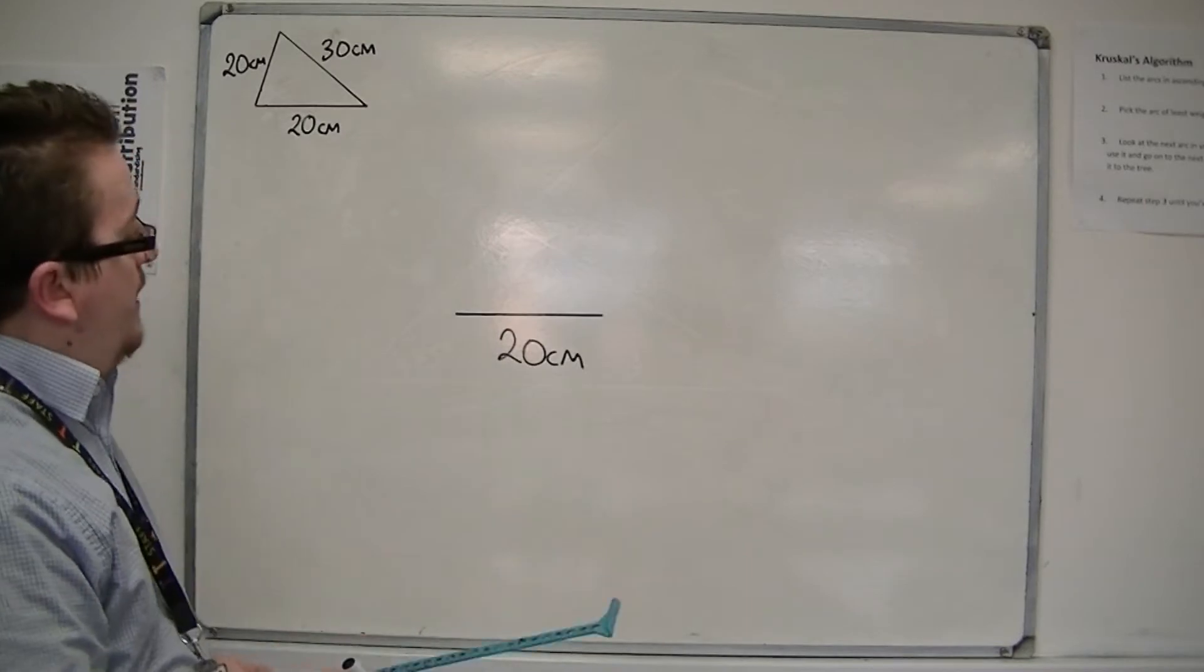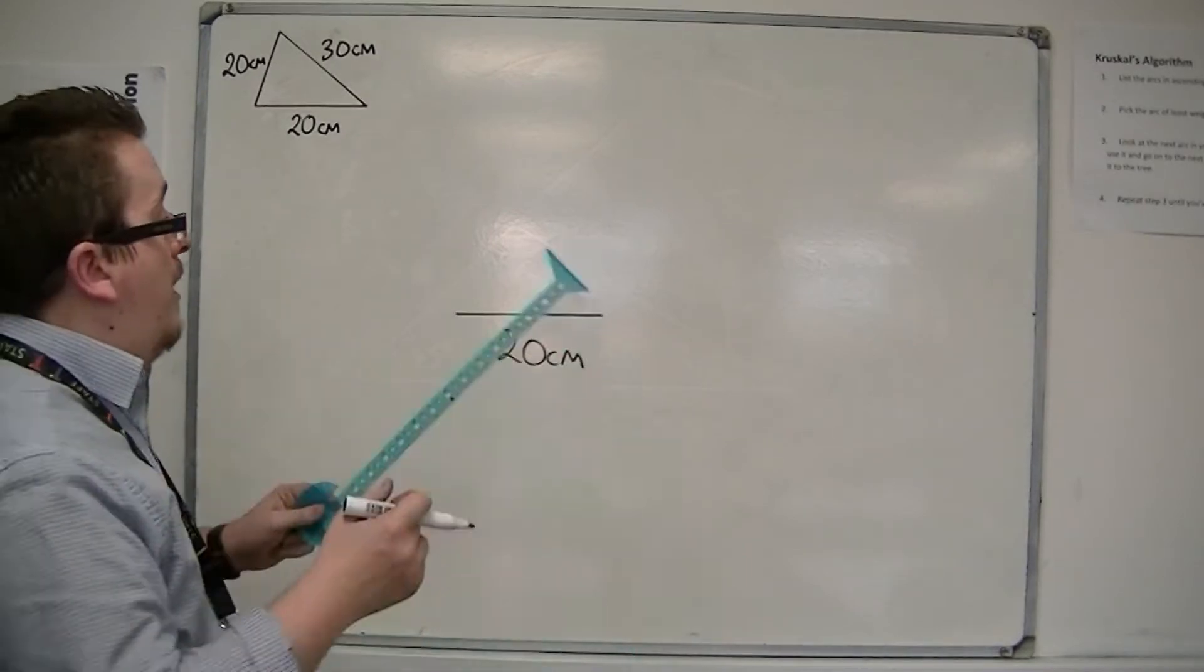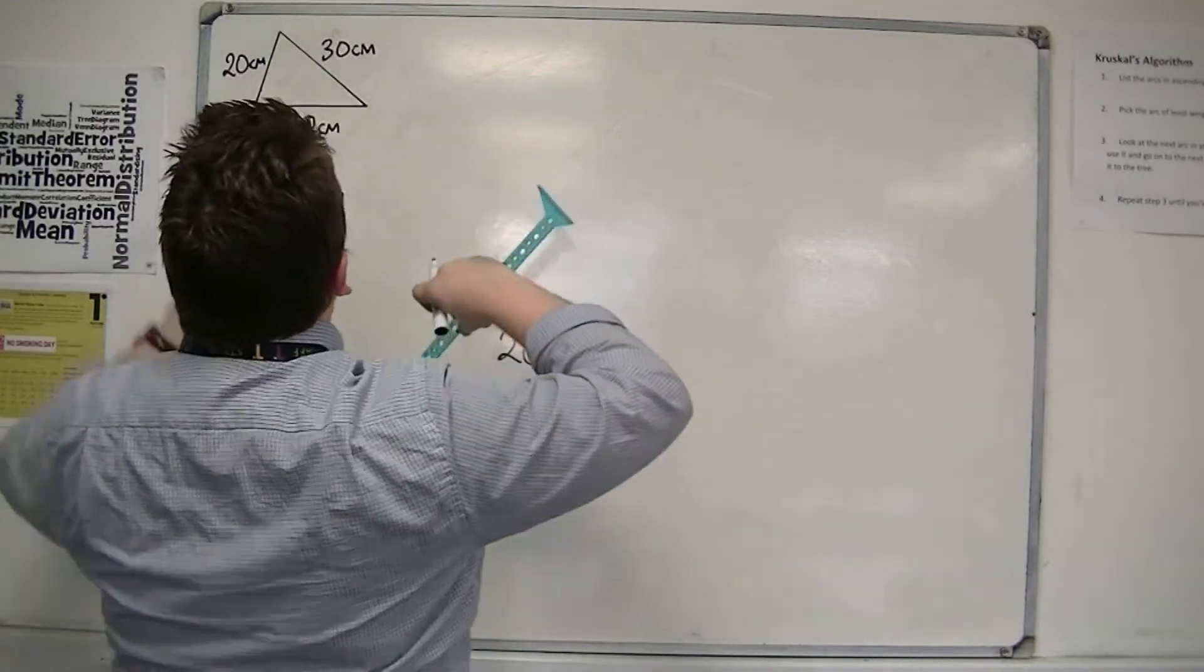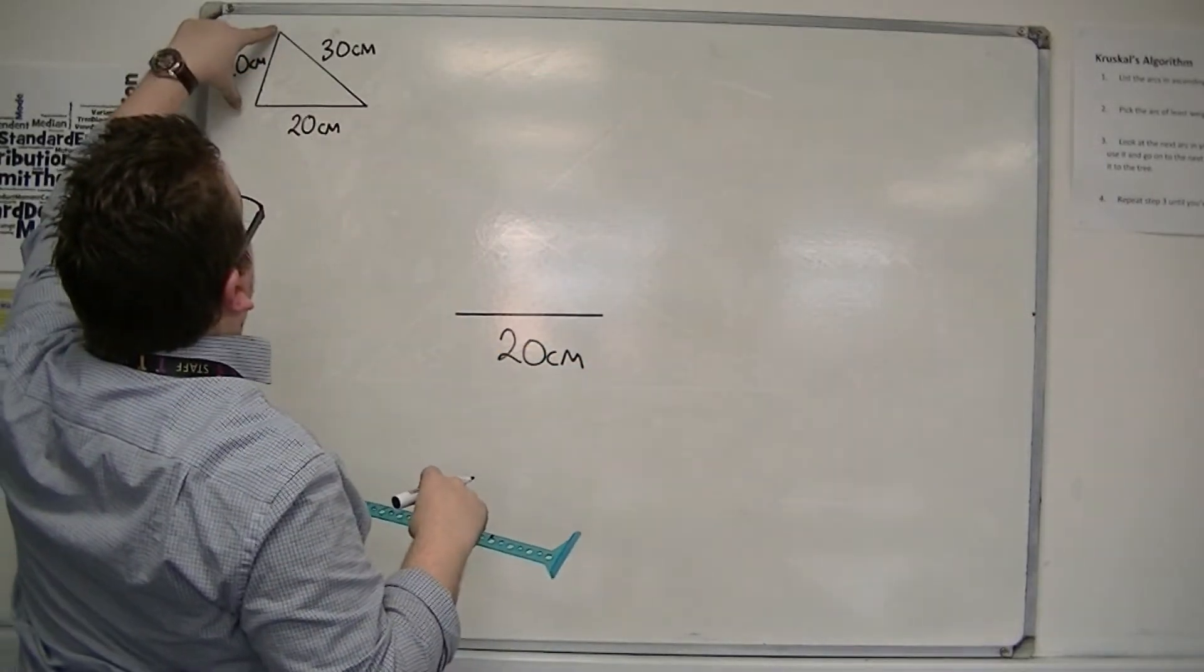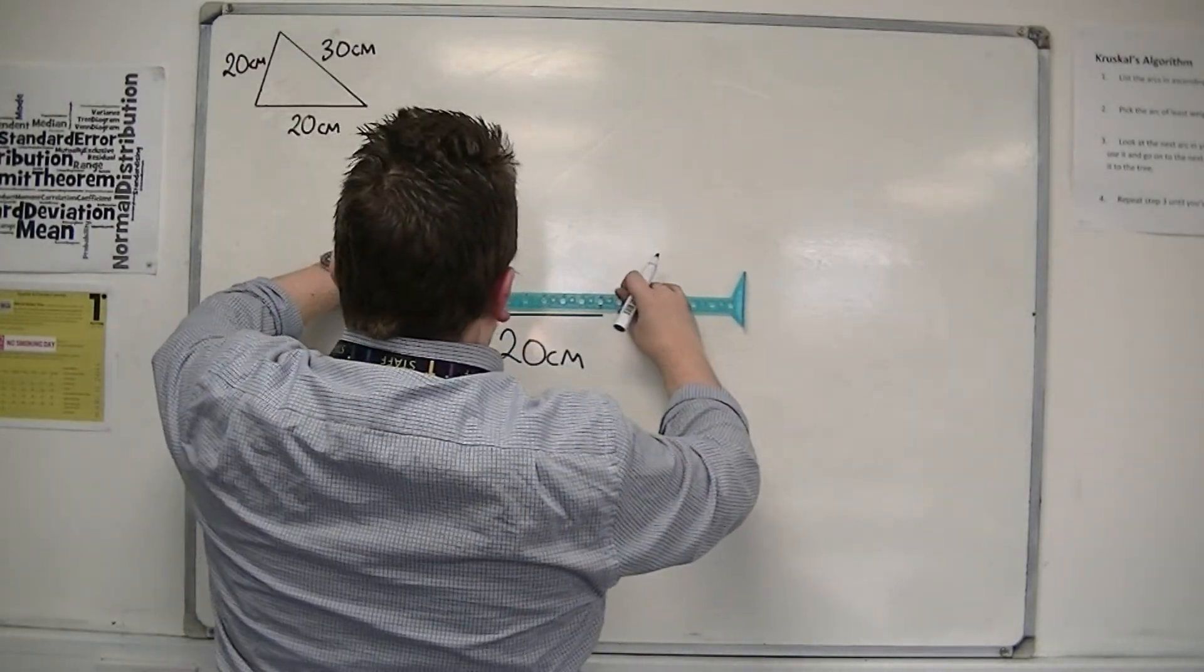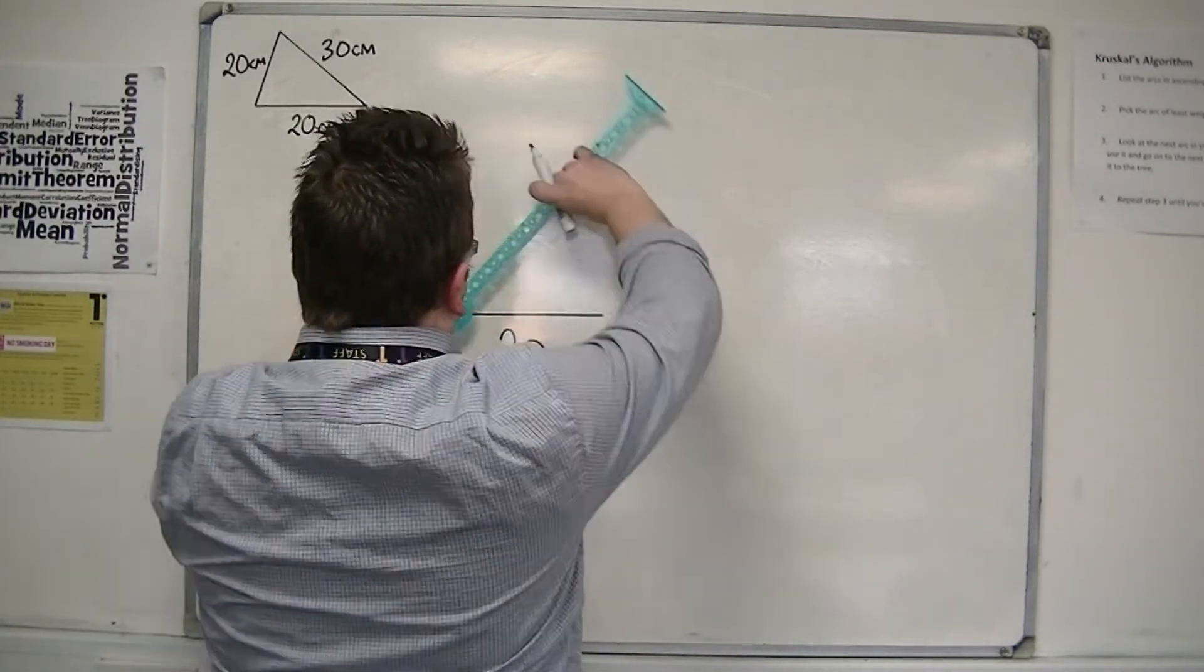So then I'm going to measure my compasses out to 20 centimeters, because I want to draw this side next. So I make sure that my compasses are set up to 20 centimeters.